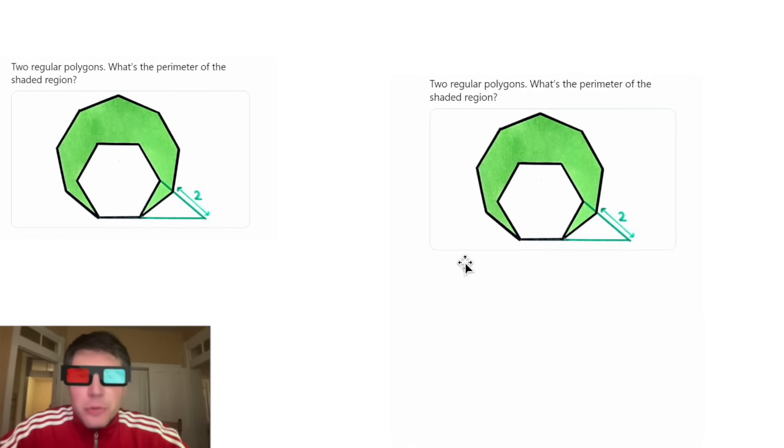Hey guys, this looks like a fun one. We're given two regular polygons, and it wants to know what is the perimeter of the shaded region. So our goal is to add up all of these sides and all of these sides. If you want to try it on your own, pause it right now,